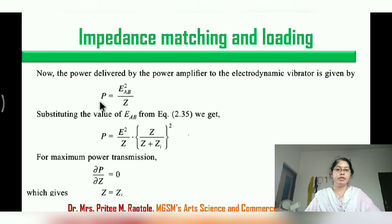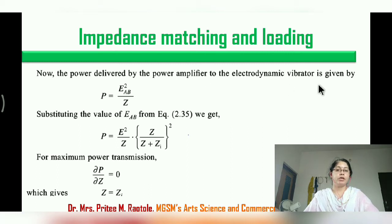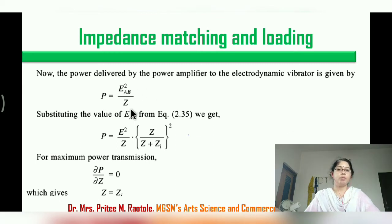Now for impedance matching: we have the power delivered. Power is equal to E squared upon R, and R is replaced by Z, so P is equal to E-squared-AB upon Z.